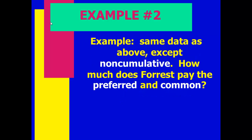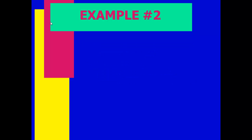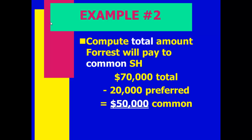Now let's redo the example, but the preferred stock is non-cumulative. We still have $70,000 available. The preferred stockholders only get their current year amount — $20,000. The other two years? Tough luck, it's gone. Common stockholders get $70,000 minus $20,000 equals $50,000. So as a common stockholder, you'd prefer the preferred stock to be non-cumulative — that's more money for you.